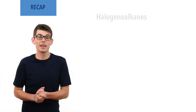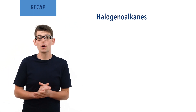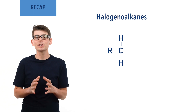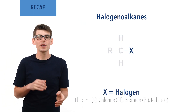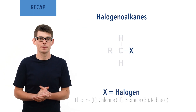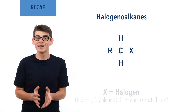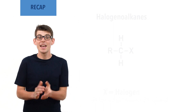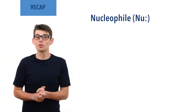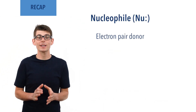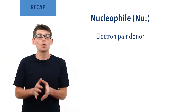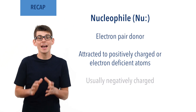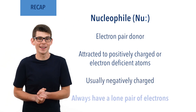Halogen alkanes, also called haloalkanes, are a group of compounds that contain an alkyl group bonded to a halogen — fluorine, chlorine, bromine, or iodine. In simple terms they're like an alkane where a halogen has taken the place of a hydrogen. A nucleophile is an electron pair donor that is attracted to a positively charged or electron-deficient atom. Nucleophiles can be negatively charged and always have a lone pair of electrons.